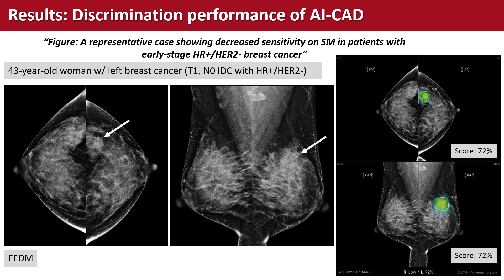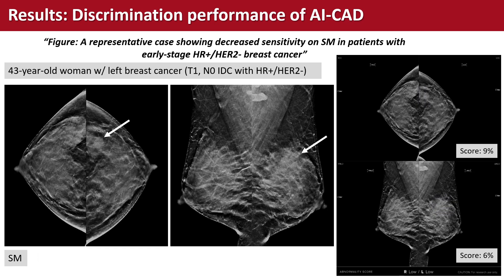This is a representative case showing decreased abnormality score and sensitivity of AI CAD on synthetic mammography for a T1 invasive ductal carcinoma with hormone receptor-positive HER2-negative subtype. Digital mammography shows a mass in the left upper outer breast, detected by AI CAD with abnormality scores of 72% on both CC and MLO views. Synthetic mammography shows a less evident mass with scores of 9% and 6%, falling below the cutoff, so AI CAD does not mark the cancer.